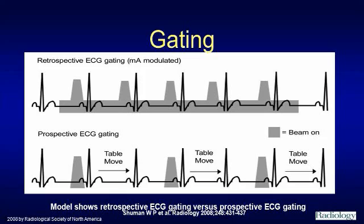We begin with an EKG tracing of the patient, looking at the heart rate and the RR interval. The technologist places what we call a pulsing window at the portion of the RR interval optimal for imaging the heart. During the remainder of the cardiac cycle, a much lower dose is administered. Although the dose from a retrospective study is still much higher than from a prospective study, with a prospective acquisition, radiation is only applied during the critical part of the cycle, and during the remainder there is no radiation administered at all.